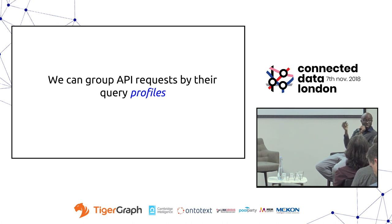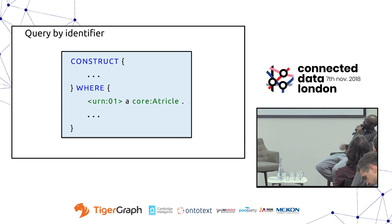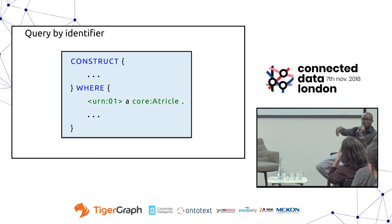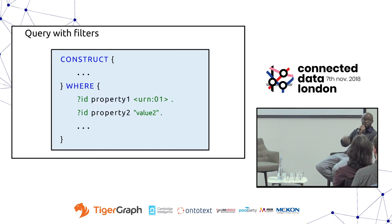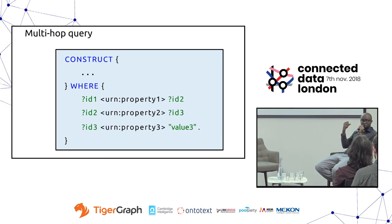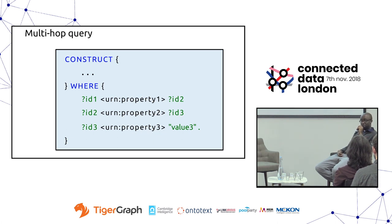Some queries are simple by-identifier lookups — a client gives us an identifier and says get me the document with this ID. Some require search and filtering — get me all documents subject to these filters. And some actually use the graph, wanting you to traverse a few hops from a certain point: get me all documents that have this relationship, that have that relationship, that has that value — requiring more graph-based querying.